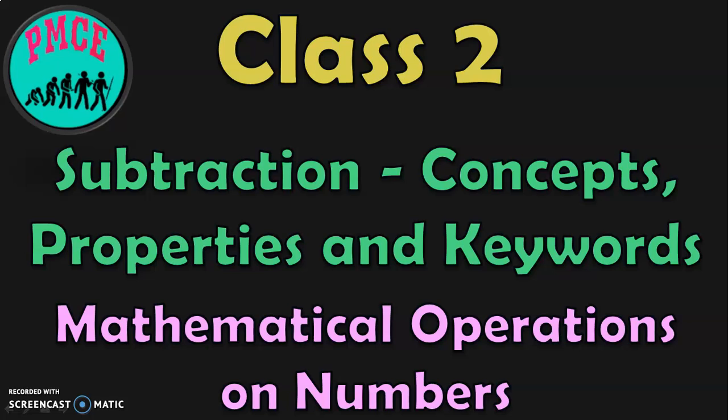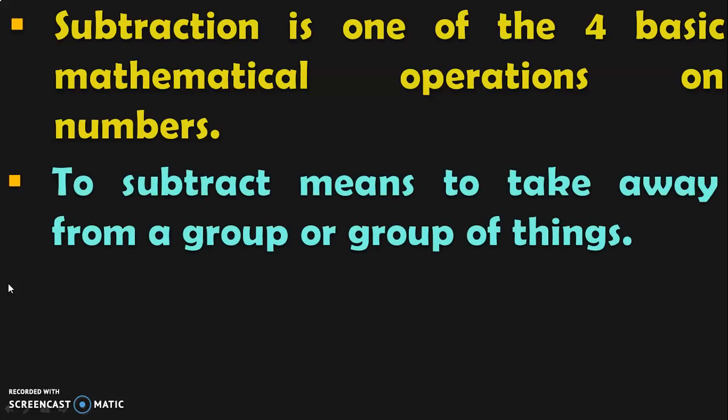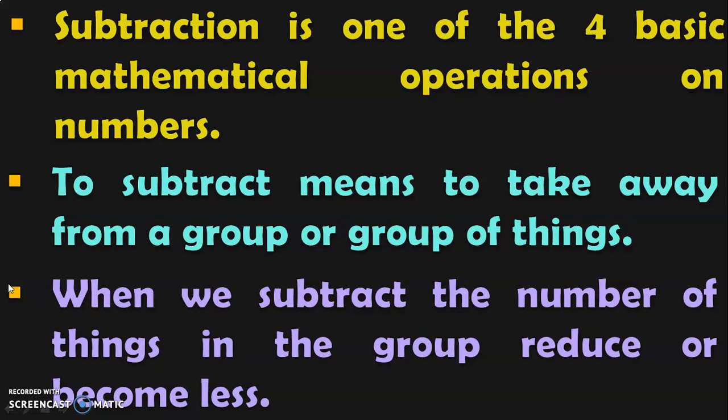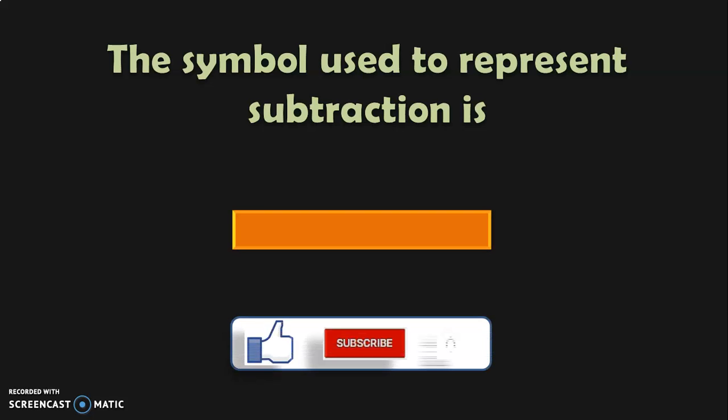You'll also be seeing the keywords which are important to remember with respect to subtraction. Subtraction is one of the four basic mathematical operations on numbers. To subtract means to take away from a group or group of things. When we subtract, the number of things in the original group will reduce or become less. The symbol used to represent subtraction is a simple minus sign.